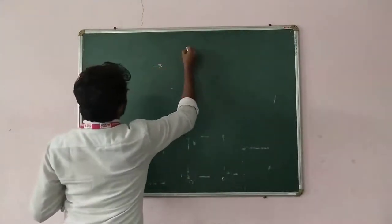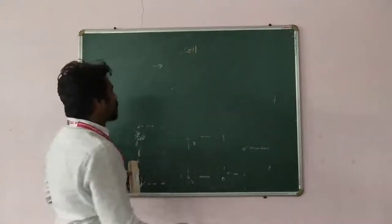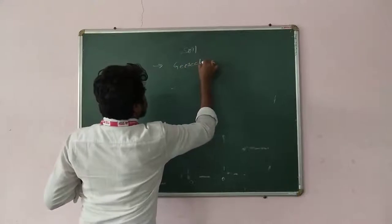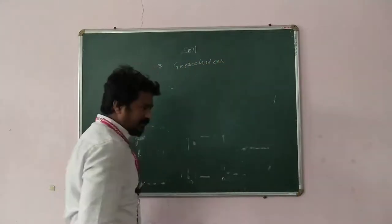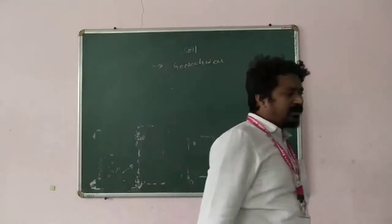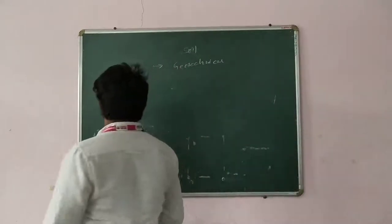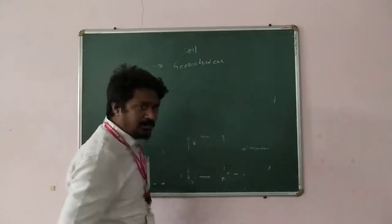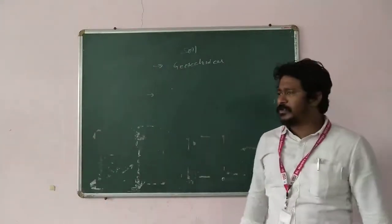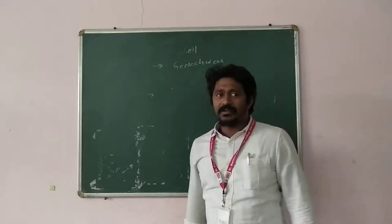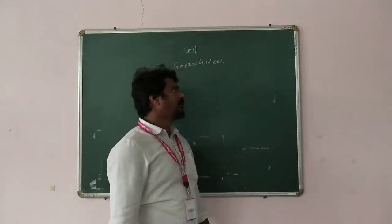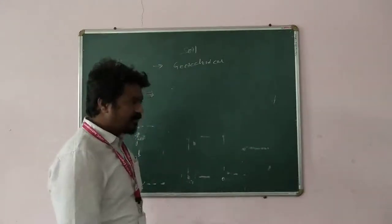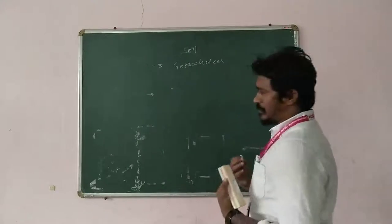Just now we discussed the soil definition. In geotechnical engineering, sometimes if you take it from an agriculturalist's perspective, soil is a naturally occurring unconsolidated surface of the earth material. Agriculture people study soil, engineering geologists study soil, geotechnical people study it, and foundation engineering people also study it. Why do they all study it?